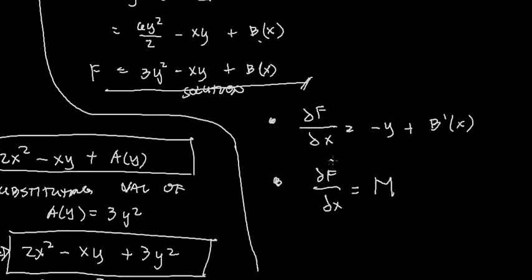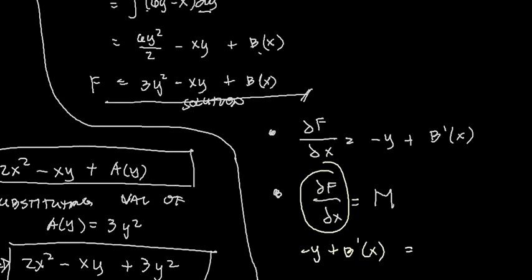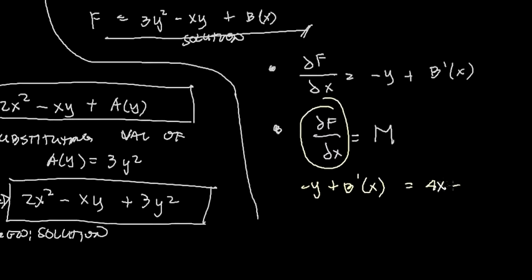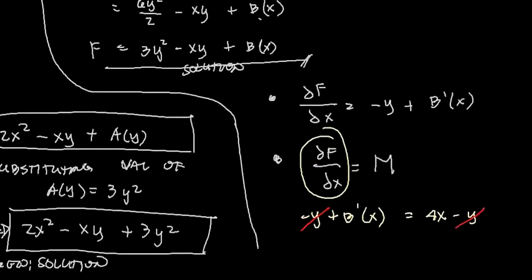So this part is -y + b'(x) = 4x - y. So we have 4x - y. As you can see here, this will result to 0. So b'(x) is just 4x.